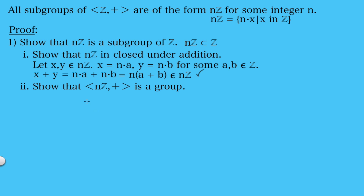Now the next thing we need to do is show that this is a group. Let's start by showing it has an identity element. We know that 0 is an integer, so we know that n times 0 must be in the set of integer multiples of n. And we know that 0 is the identity element for addition, so we have shown that it does have an identity element.